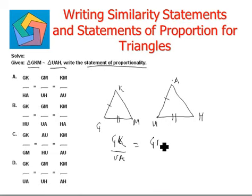So we have GM over UH equals to KM over AH. KM over AH.